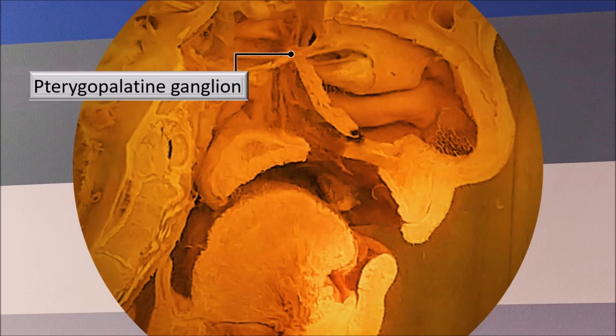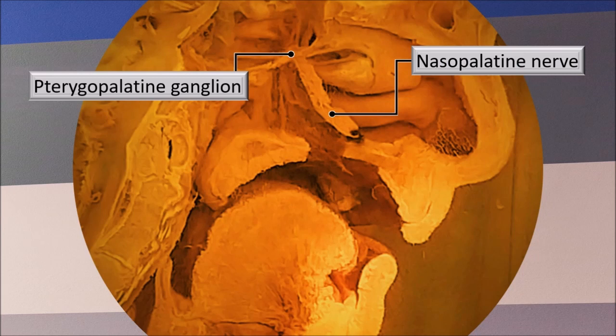The pterygopalatine ganglion is shown lateral to the lateral wall, which has been cut away. Descending straight down is the lesser palatine nerve, obliquely down is the greater palatine nerve, and in front is the nasopalatine nerve. The nasopalatine nerve is particularly well demonstrated here, as a little bit of the nasal septum has been retained, and you can see the nasopalatine nerve on the nasal septum — that is the principal nerve supply to the septum.